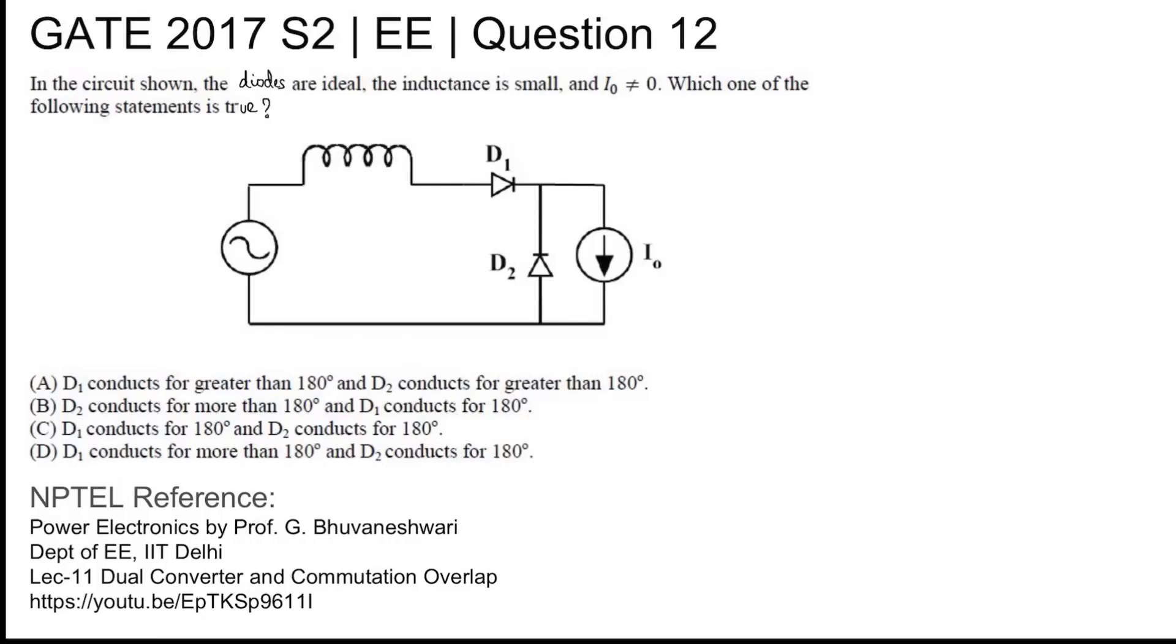This is Gate 2017 set 2 electrical question number 12. In the circuit shown, the diodes are ideal, the inductance is small and I0 not equal to 0. Which one of the following statements is true? Four options are given.